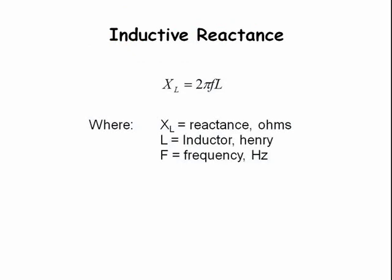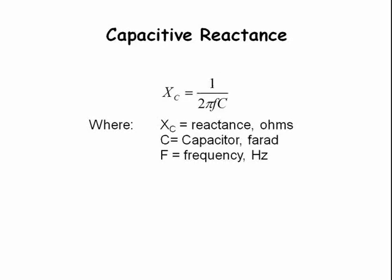With DC, we have just one term to deal with: resistance. With AC, we have a second term: reactance. We can have inductive reactance, capacitive reactance, or both. Inductive reactance increases with increasing frequency; higher inductance also causes inductive reactance to increase. Capacitive reactance decreases as frequency increases. Also, as capacitance increases, capacitive reactance decreases.